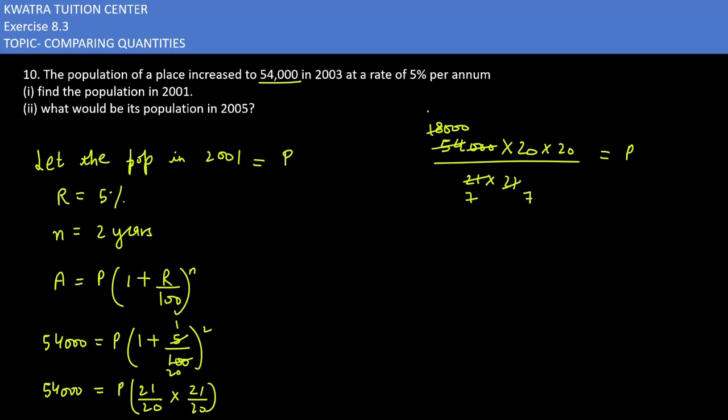So this would be 3, now 6,000. You are getting the value as 6,000 into 20 into 20. 20 into 20 is 400. 400 multiplying it with 6,000 you are getting 24 lakh, and dividing it by 49 that will be my principal. The value you are getting is 48,979 in decimal, which will be written in terms of approximate.